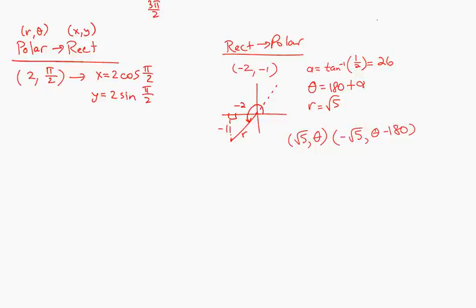26.565, I guess I should write the 3 decimals. And so then I know that my angle is going to be 206.565. So one of my points would be (√5, 206.565°).